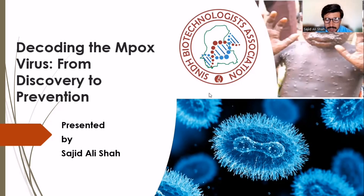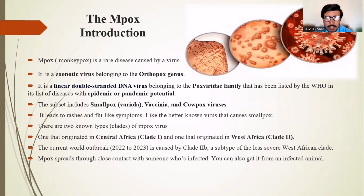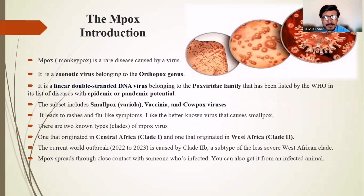The monkeypox virus, or mpox disease, is a disease caused by the monkeypox virus. It was first given the name monkeypox because it was first discovered in monkeys. It is now called mpox virus or mpox disease. It is a zoonotic virus belonging to the Orthopoxvirus genus — a linear double-stranded DNA virus belonging to the Poxviridae family, listed by the WHO among diseases with pandemic and epidemic potential.